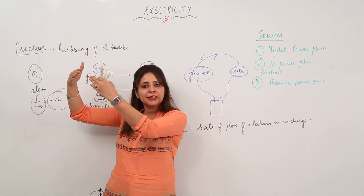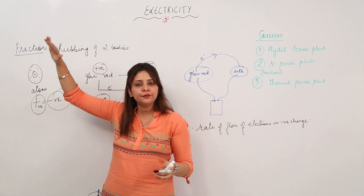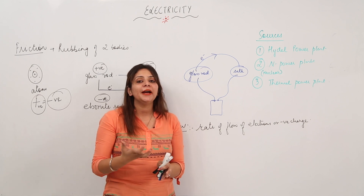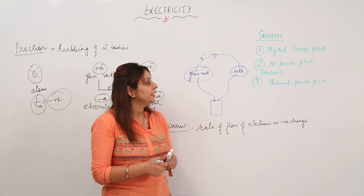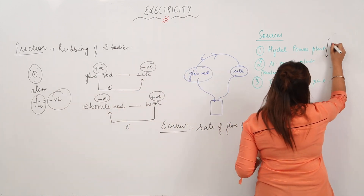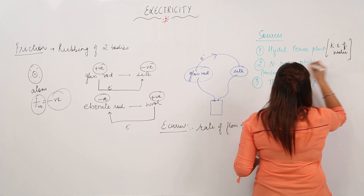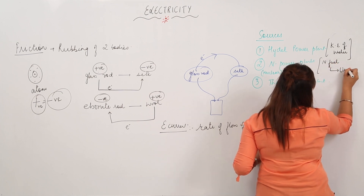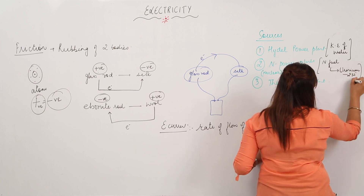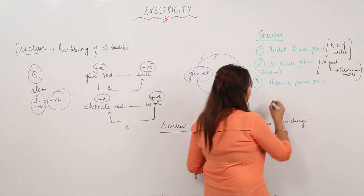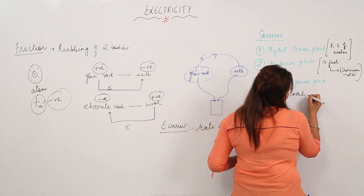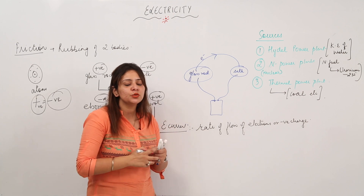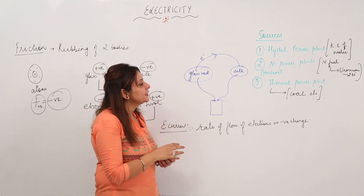In a hydel power plant, we make use of the kinetic energy of water. Water is stored and when the gates are opened, it flows at high speed, running a turbine, which generates electricity. In a nuclear power plant, we make use of nuclear fuel — a radioactive substance like uranium-235. In a thermal power plant, we make use of coal; we burn it and the energy produced runs the turbines.